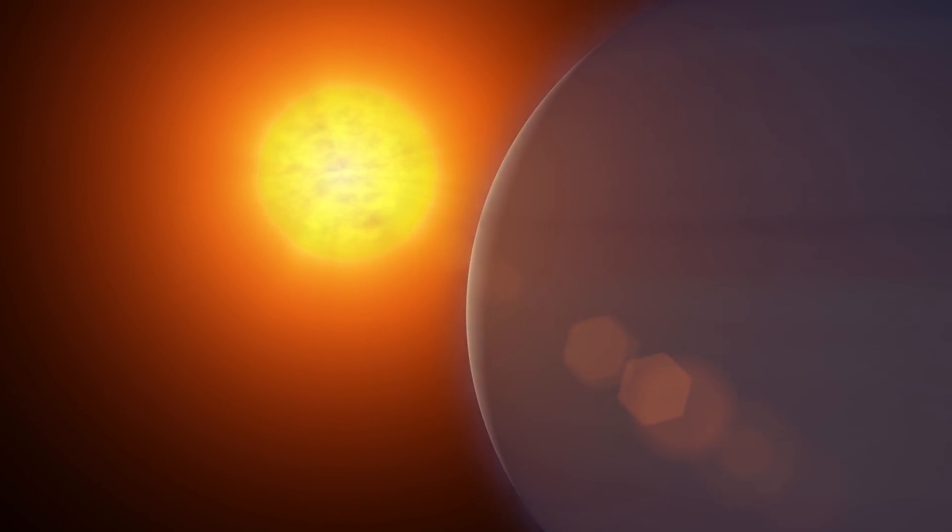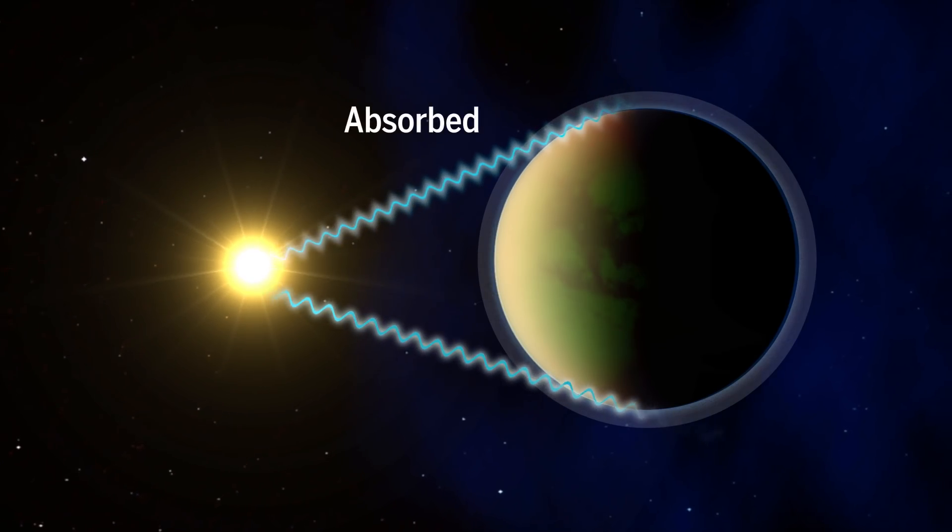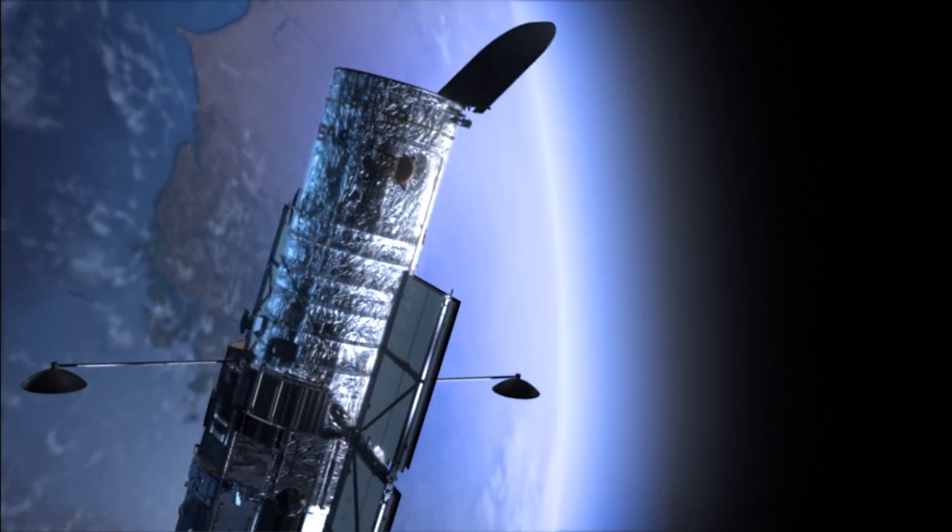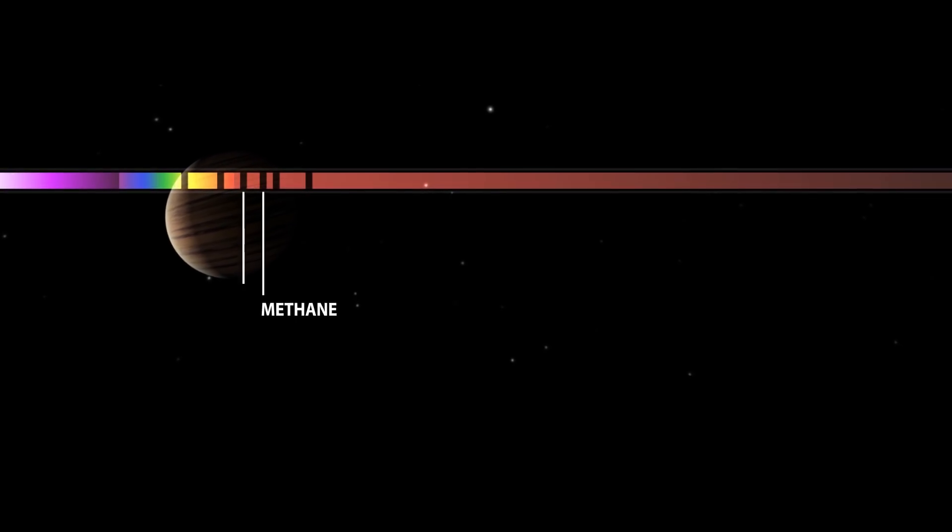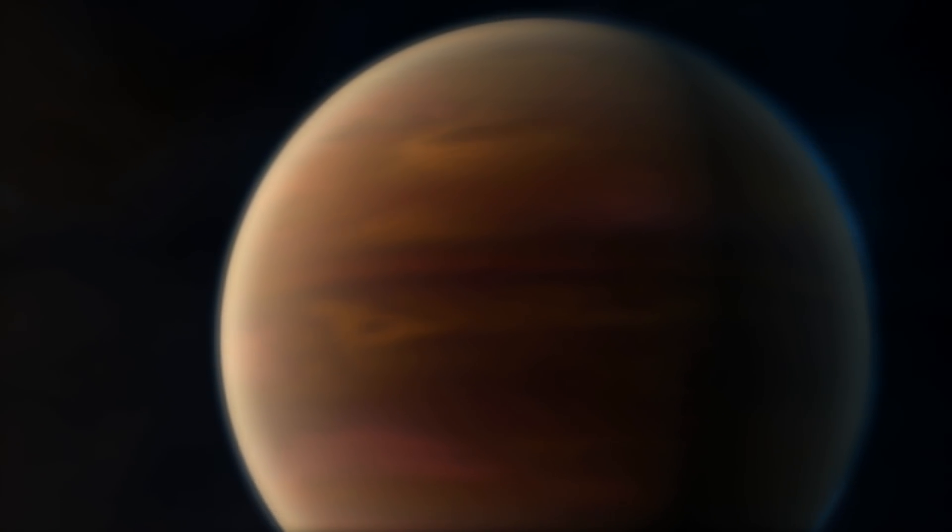When a planet passes in front of its star, some of the starlight arriving to telescopes will have passed through the planet's atmosphere, and gases will have absorbed certain wavelengths. Space telescopes such as Hubble are using this method to detect gases around exoplanets. For now, they've only managed this with a few gas giants, not around anything like Earth.